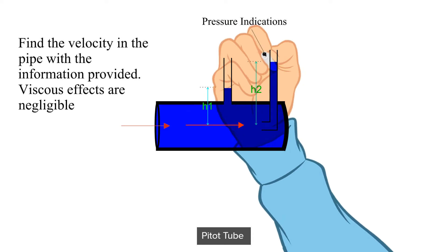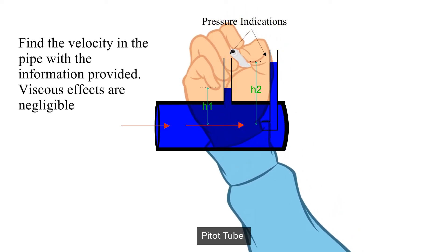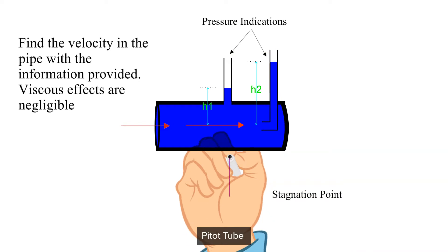Note that the second standpipe extends to the center line of the pipe and makes a 90 degree turn into the flow. This creates a point of zero velocity or stagnation point.